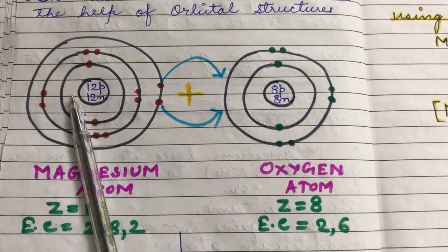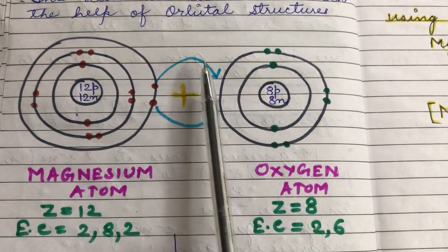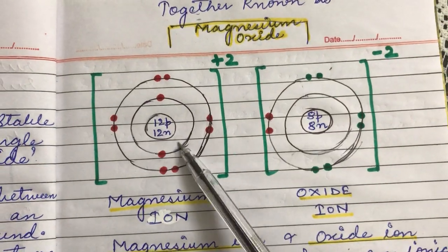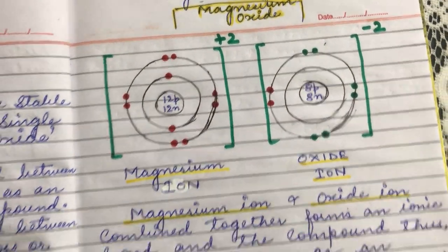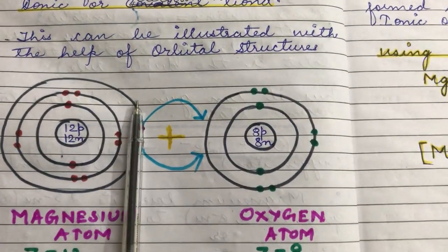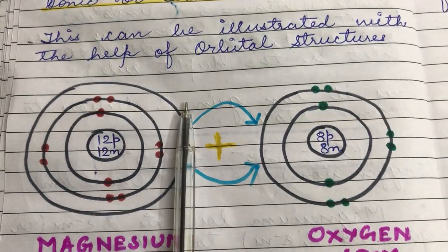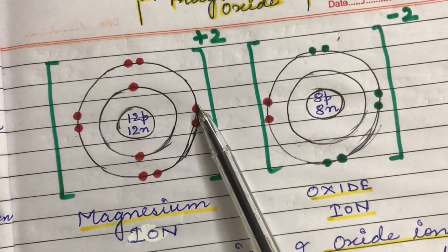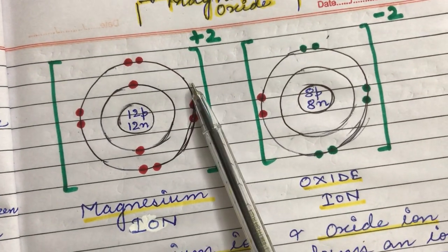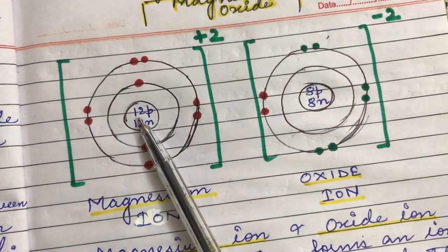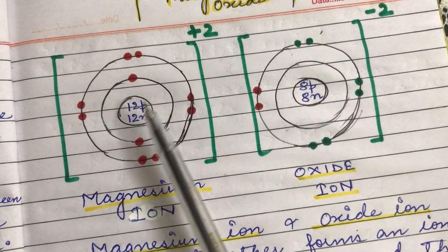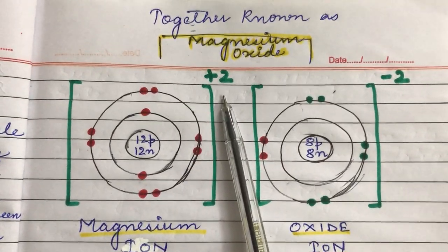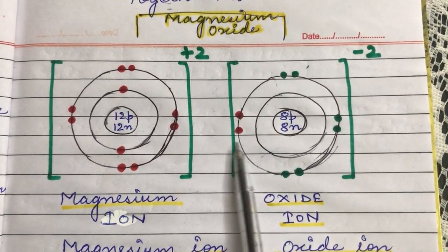If magnesium loses its two electrons, it will be left with only two shells and will become stable. So magnesium gives away its two electrons to oxygen. After losing these two electrons, magnesium has 12 protons in the nucleus but now only 10 electrons — 2 in the first shell and 8 in the second shell. Since protons are more than electrons, 12 minus 10 gives a net charge of +2. This is how the magnesium ion gets a +2 charge.